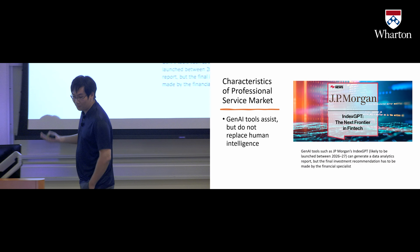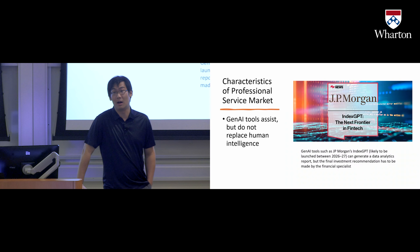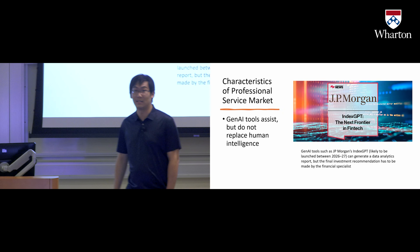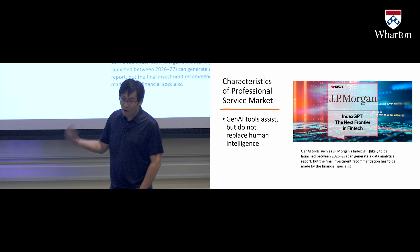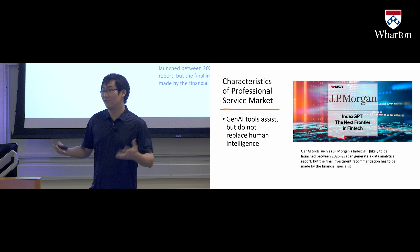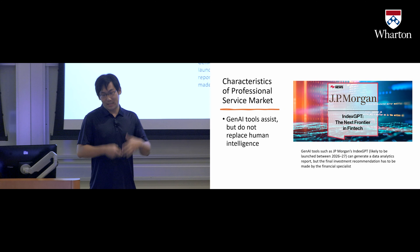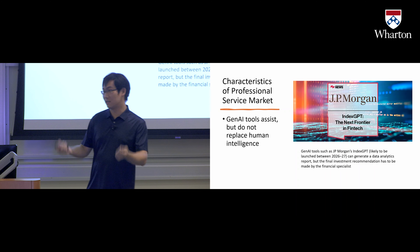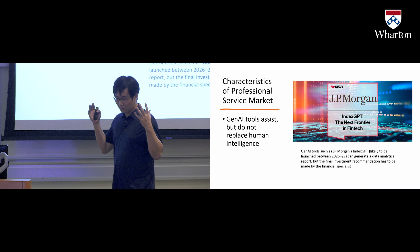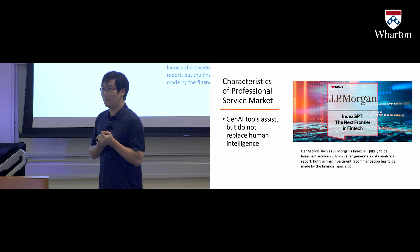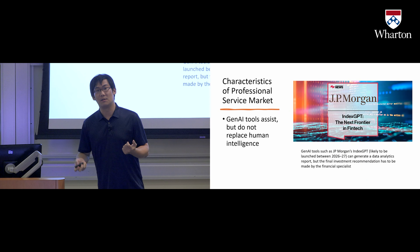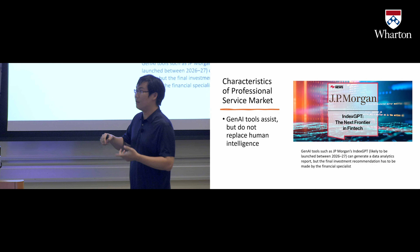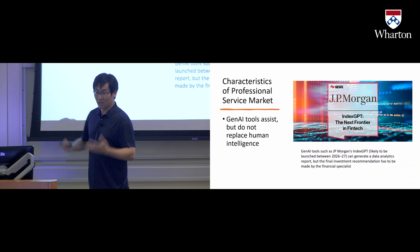For example, JP Morgan announced they were going to introduce a product powered by generative AI called IndexGPT, which can help financial service providers generate data analytics reports. But at the end of the day, what stocks you should invest in — the actual recommendations or opinions — have to be generated by real humans. We are not studying AI that can replace humans, but AI that can assist human decisions.